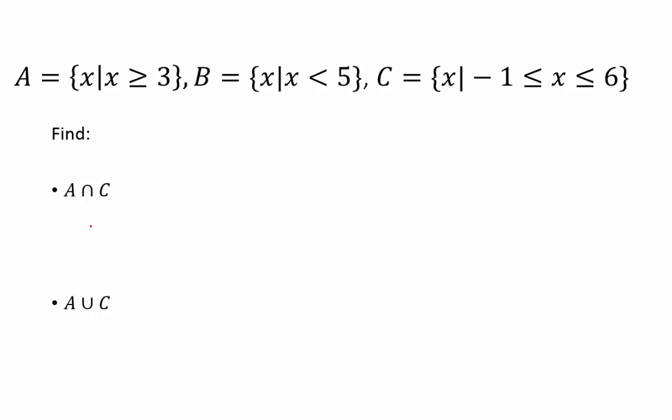It's like how we have operations for numbers: add, subtract, multiply, divide. For sets, the operations are union and intersection, and we know which two sets we're dealing with, A and C, so we choose those.